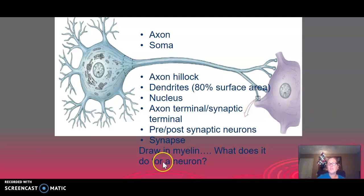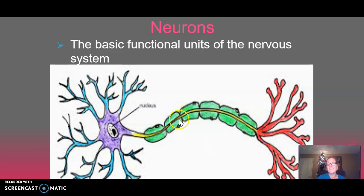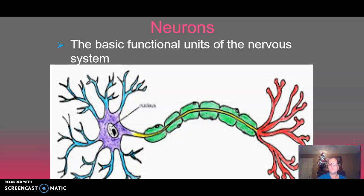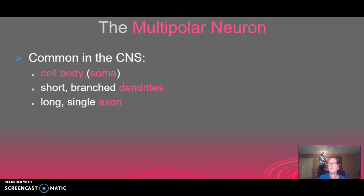The green in the earlier picture represented the cells that produce myelin. Myelin is a white, fatty substance that helps axons conduct their impulses faster. Make sure you're able to identify each of those structures, and add more detail — maybe a sketch — in your notes.